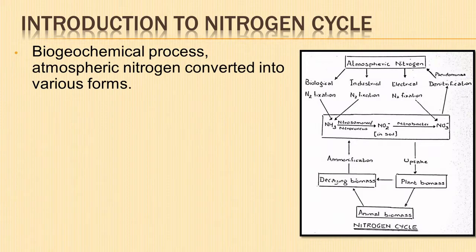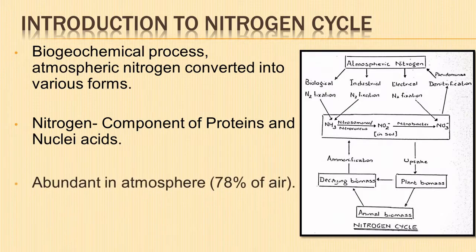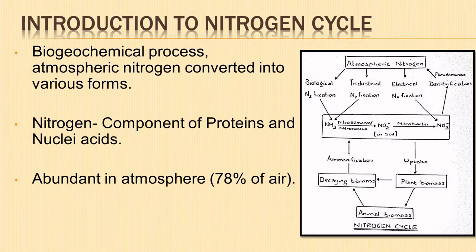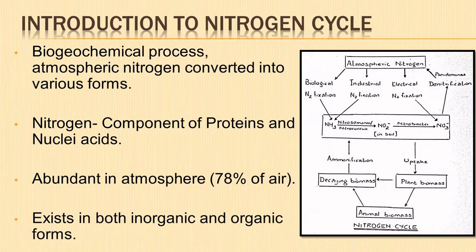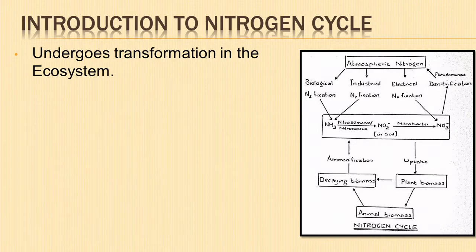The nitrogen cycle is a biogeochemical process in which atmospheric nitrogen is converted into various usable forms for living organisms. Nitrogen is a component of proteins and nucleic acids, which are essential components of living systems. Nitrogen is abundant in the atmosphere — about 78% of the air — as dinitrogen gas, but plants cannot make use of this free nitrogen. Nitrogen exists in both inorganic and organic forms and undergoes many transformations in the ecosystem, changing from one form to another.